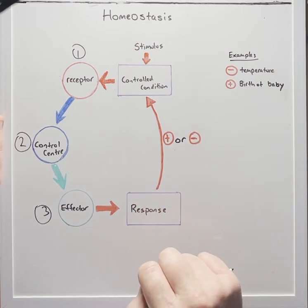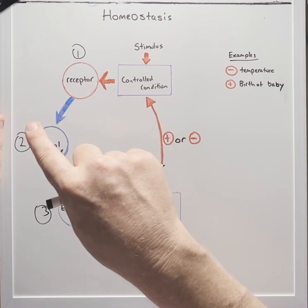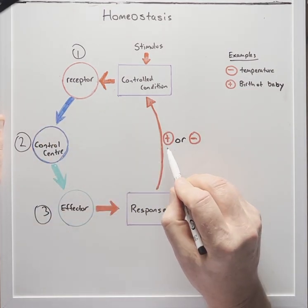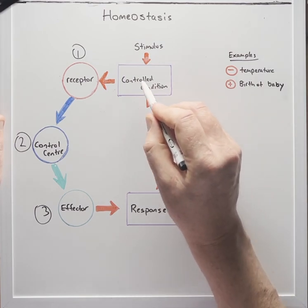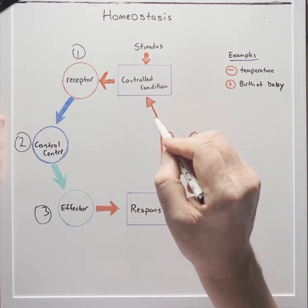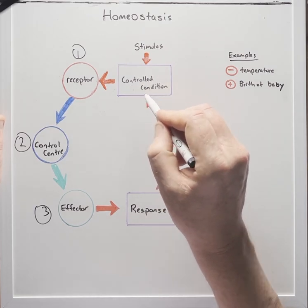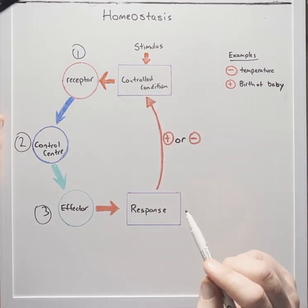There can be two main categories of this homeostatic feedback loop. It can be a positive feedback or a negative feedback. The negative feedback reverses the change in the controlled condition whilst the positive feedback strengthens or amplifies the change in the control condition.